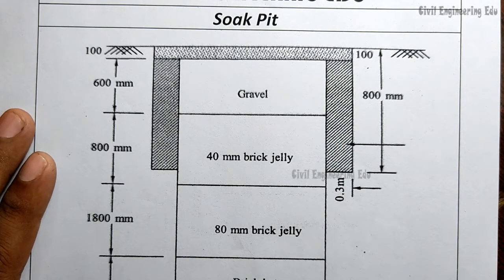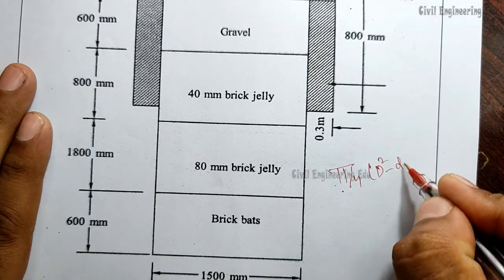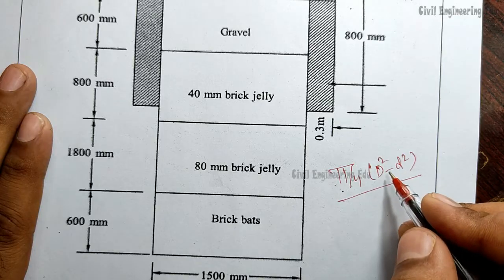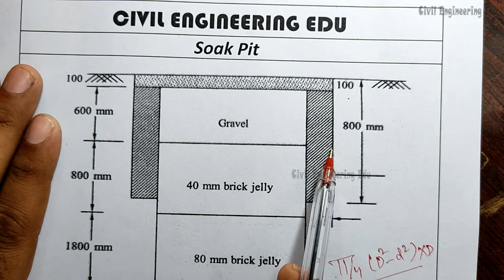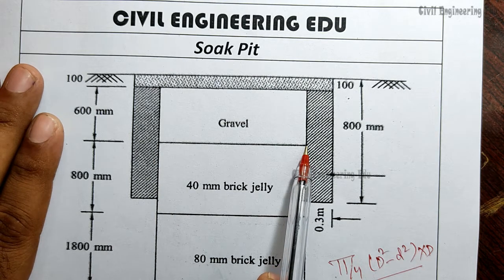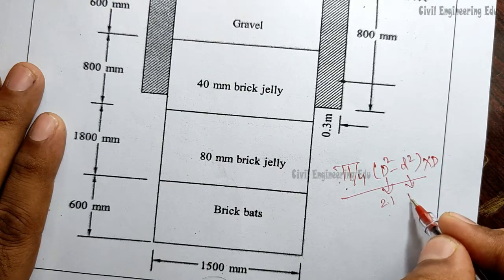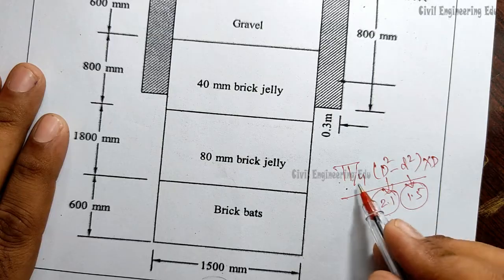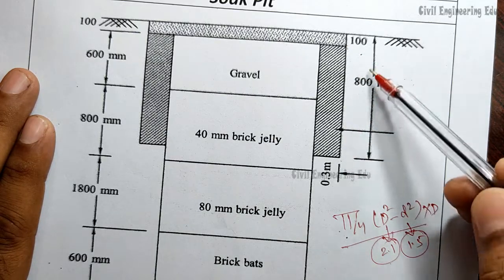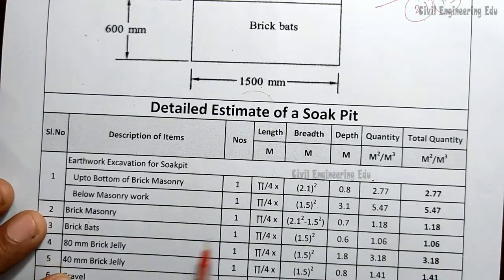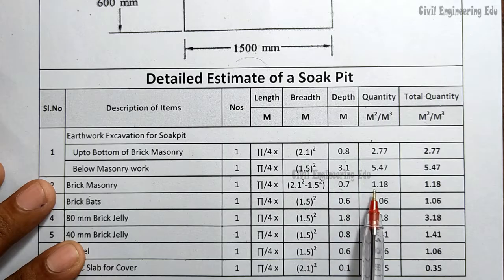For brick masonry, the formula is pi/4 × (D² − d²) × depth, where D is the outer diameter and d is the inner diameter. The outer diameter D is 2.1m (from outer edge to outer edge) and the inner diameter d is 1.5m. The brick masonry depth is 800mm minus 100mm for the cover slab, giving 700mm or 0.7m. So: pi/4 × (2.1² − 1.5²) × 0.7 gives the brick masonry quantity.